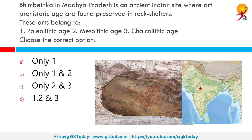The drawings and paintings from Bhimbetka can be classified under seven different periods. Upper Paleolithic ones are linear representations in green and dark red of huge figures of animals such as bison, tigers, and rhinoceros. Mesolithic figures were comparatively small in size, showing linear decoration on their body. In addition to animals, there are human figures and hunting scenes showing weapons used — barbed spears, pointed sticks, bows and arrows. The Chalcolithic drawings reveal that cave dwellers were in contact with the agricultural communities of the Malwa plains, exchanging goods with them.